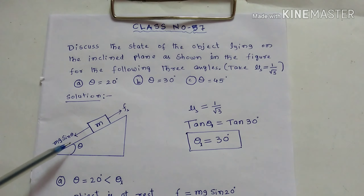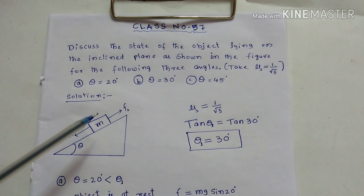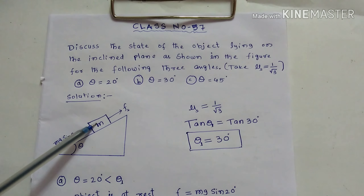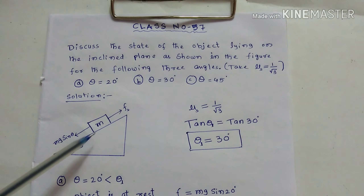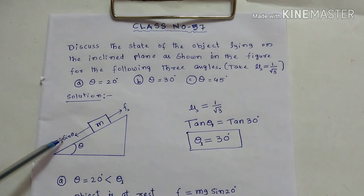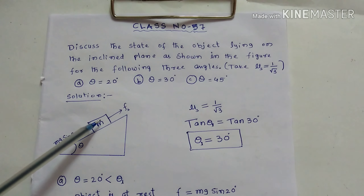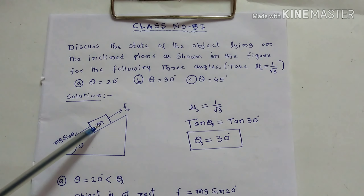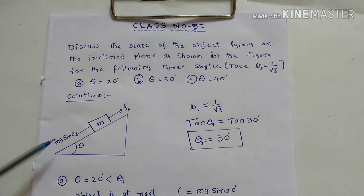This is an inclined plane making angle theta with the horizontal surface. One object of mass M is lying on the inclined plane. Because of gravitational force downward, one component of the gravitational force along this direction is Mg sin theta — already derived in the previous class. So it is supposed to move along this direction, but it is not moving, because there is one force of static friction that is opposite to Mg sin theta.